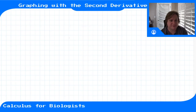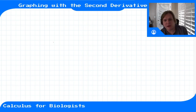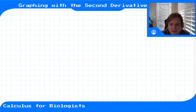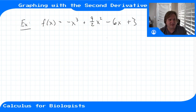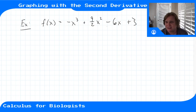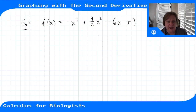Now that we've covered the second derivative and what it tells us about the graph of a function, we're ready to start graphing functions using nothing more than the first and second derivatives. Let's work through an example and then point out the general process of graphing. Our function is f(x) = -x³ + (9/2)x² - 6x + 3 — just some random polynomial we want to graph by hand.